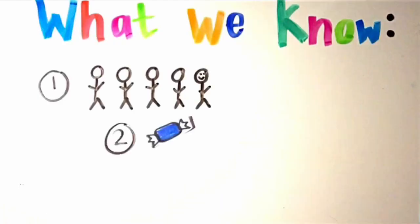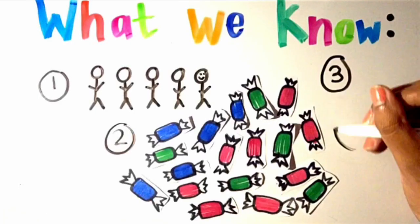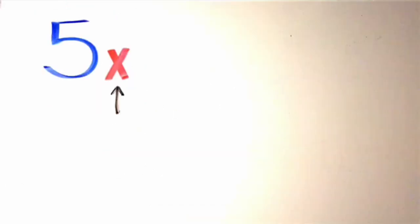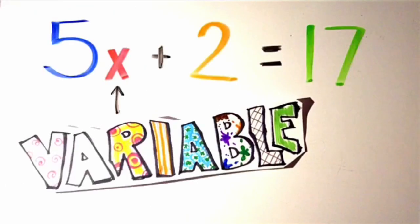To set up this equation, we should state what we do know. There are 5 people, 17 Jolly Ranchers, and you ate two. So we know 5 times something plus the 2 you just ate equals the 17 Jolly Ranchers we started out with.